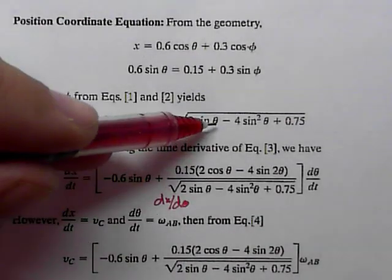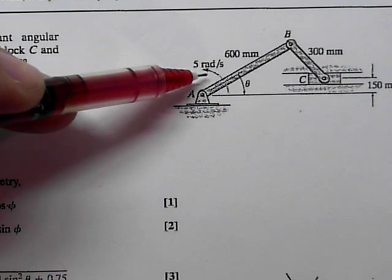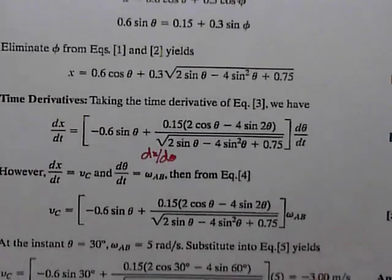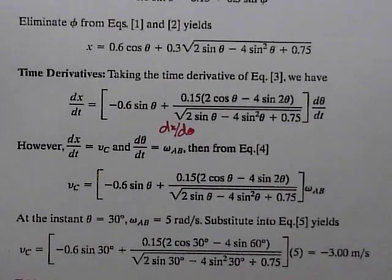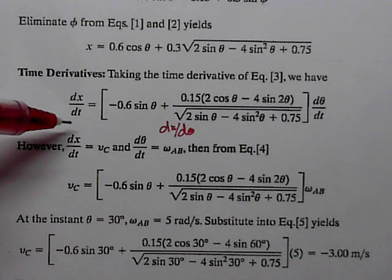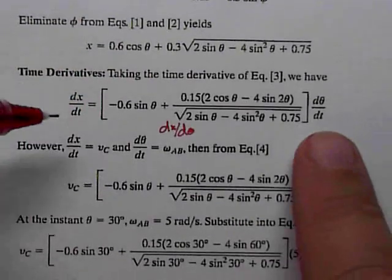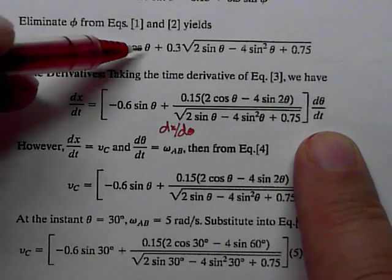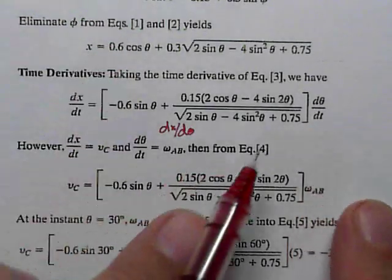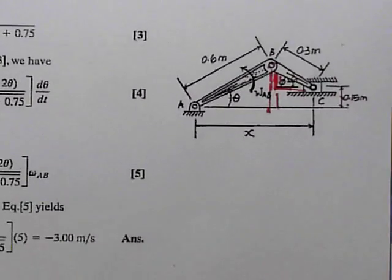Now x is a function of theta alone. Presuming we control angle theta and its derivative, we can take derivatives using the chain rule — what I call the funny derivatives from the cylindrical coordinates section. The derivative of 0.6 cosine of theta with respect to time is minus 0.6 sine of theta, times d theta dt. We proceed along and solve for all the things we want.